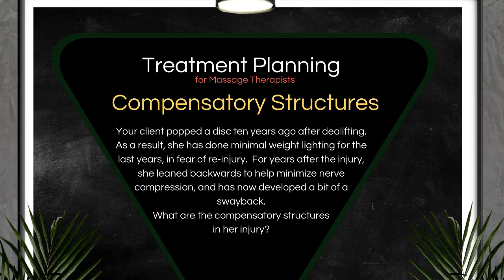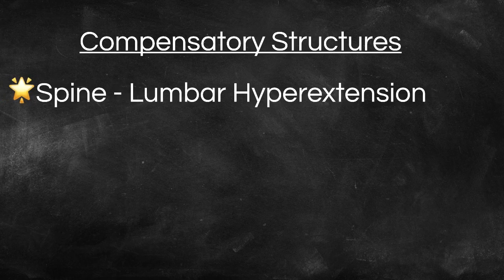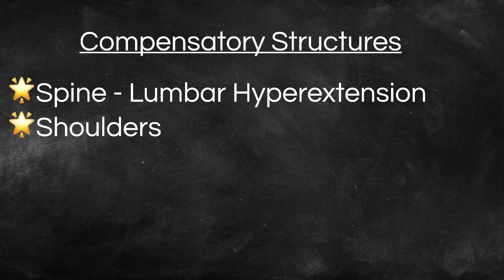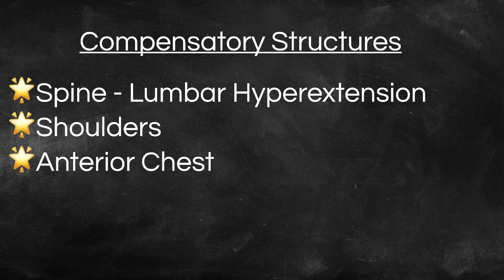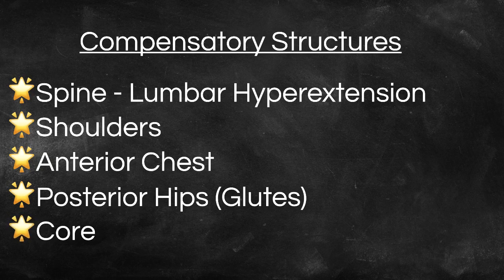Client scenario number four: your client popped a disc 10 years ago after deadlifting. As a result, she has done minimal weightlifting for the last few years in fear of re-injury. For years after the injury, she leaned backwards to help minimize nerve compression and has now developed a bit of a sway back. The compensatory structures include the spine — hyperextension of the lumbar spine, which tightens the erectors. The shoulders are rounding to maintain balance for the change in plumb line caused by the hyperextension of her lumbar spine. Her anterior chest wall is shortened due to rounding of the shoulders. Her tight glutei are compensating for the weakness that's occurred in her low back to create strength, and she likely has a very disengaged core as a result of her sway back.